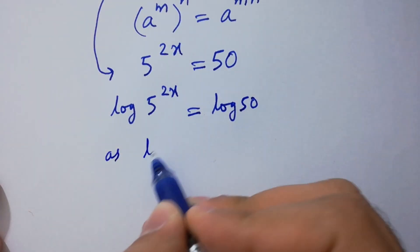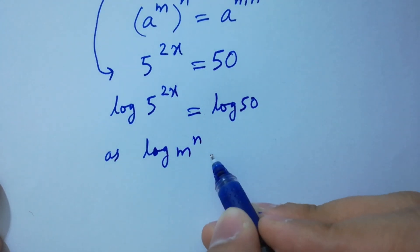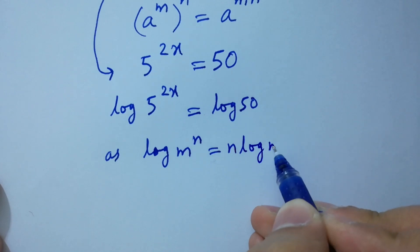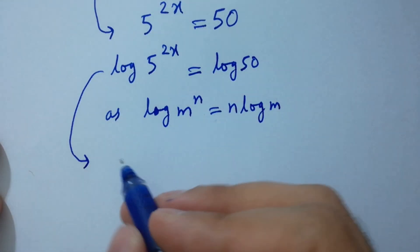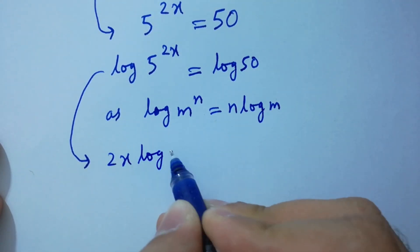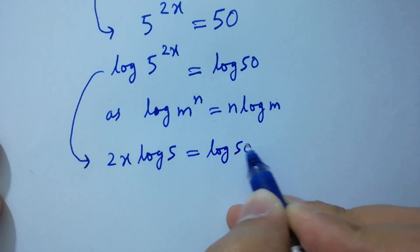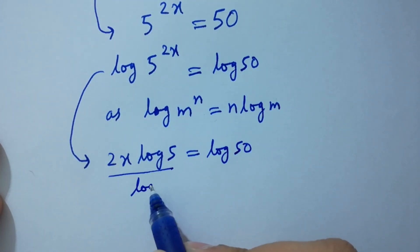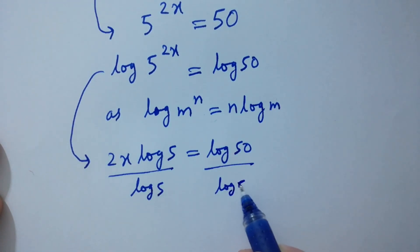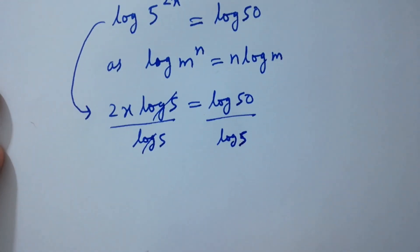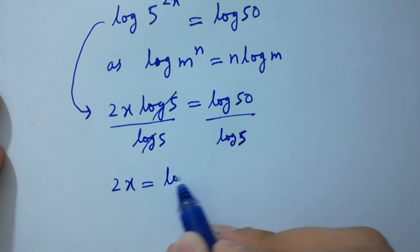Take log on both sides: log 5 to the power 2x equals log 50. As log m to the power n equals n log m, it will be 2x log 5 equals log 50. Divide by log 5 on both sides — log 5 and log 5 cancel — giving 2x equals log 50 over log 5.